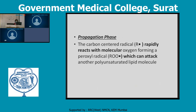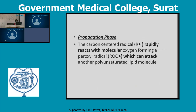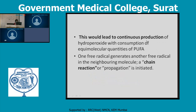In the propagation phase, the radical rapidly reacts with molecular oxygen, forming a peroxide radical, which can attack another polyunsaturated lipid molecule, resulting in conversion into hydroperoxide. This leads to a chain reaction — one free radical generates another free radical in the neighboring molecule, and the chain reaction is propagated.